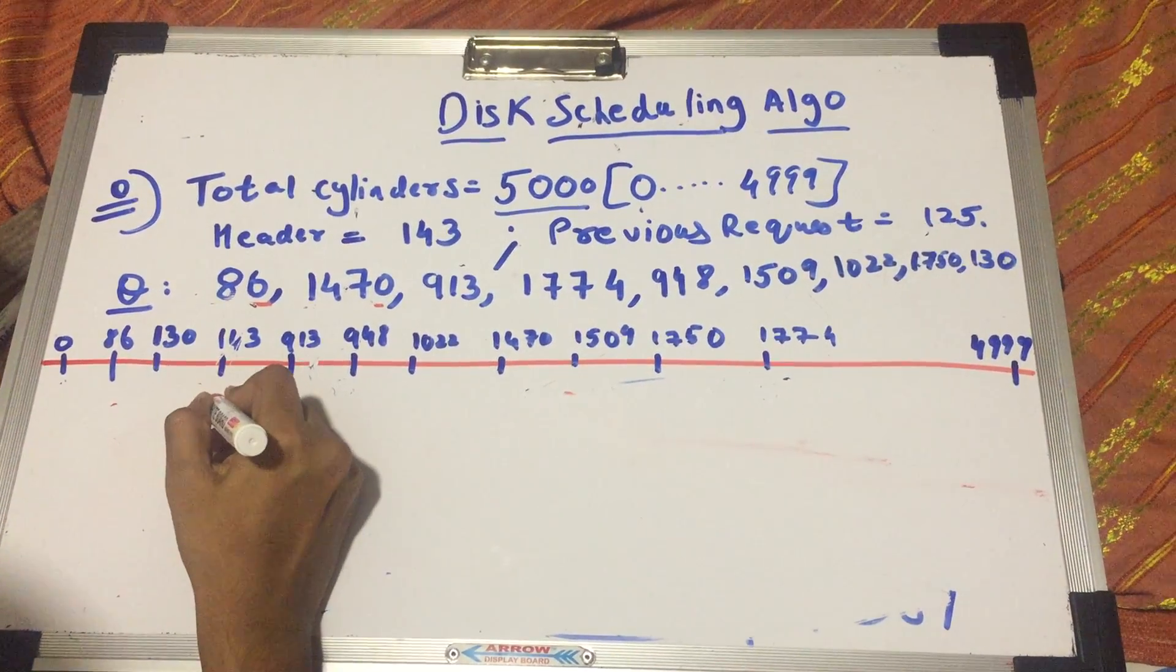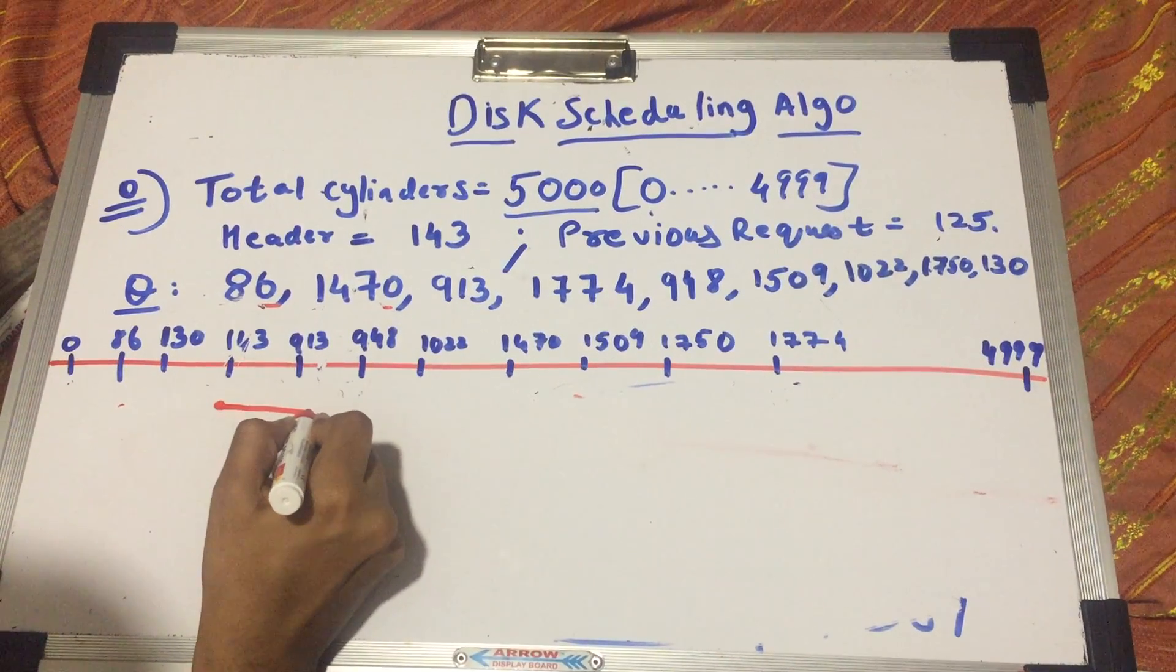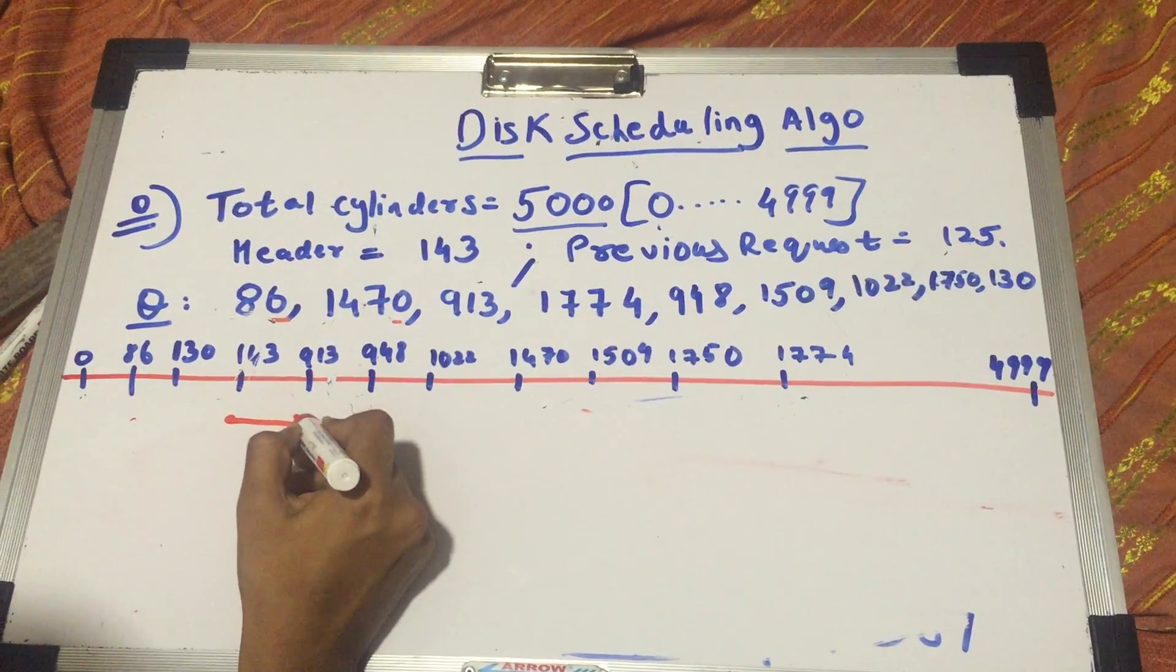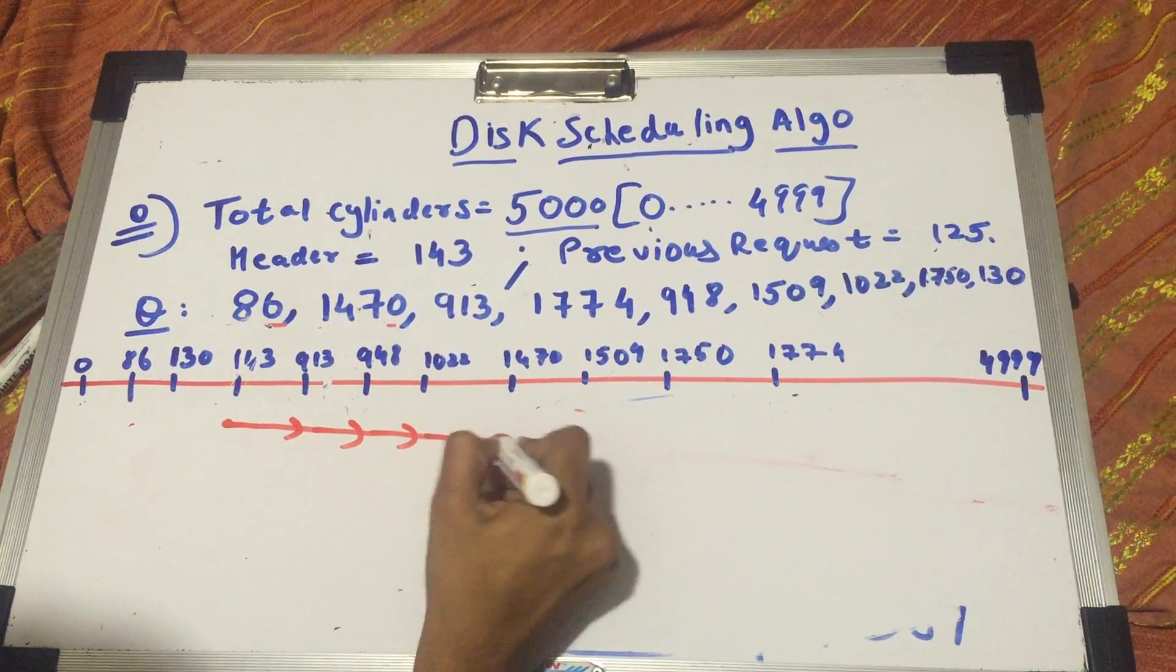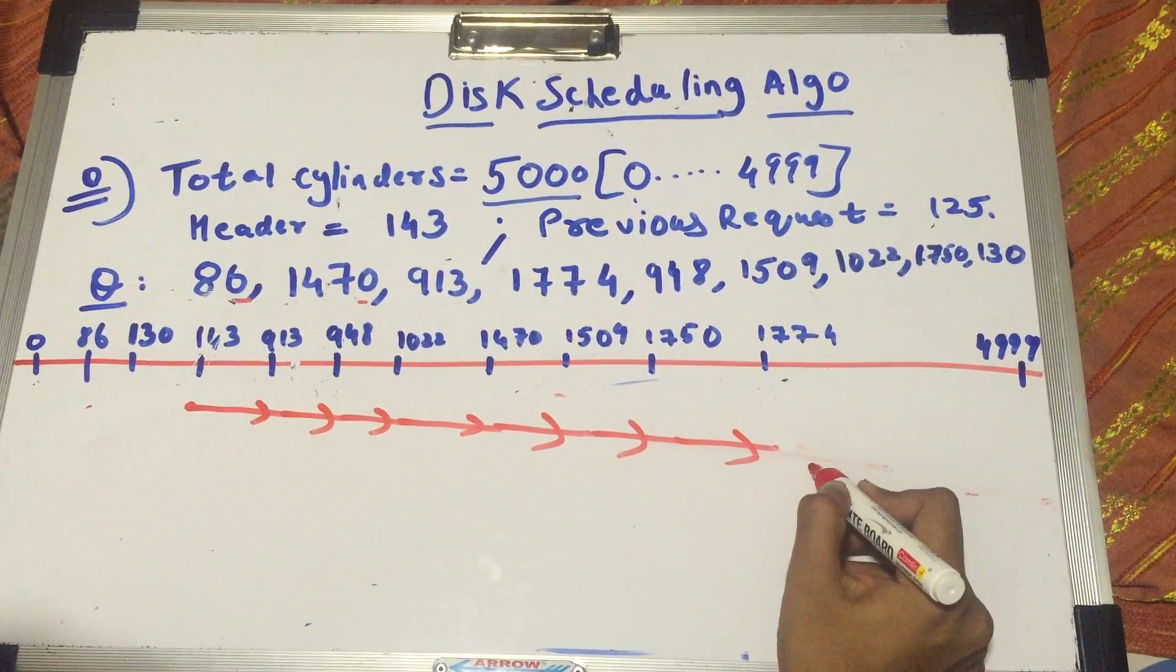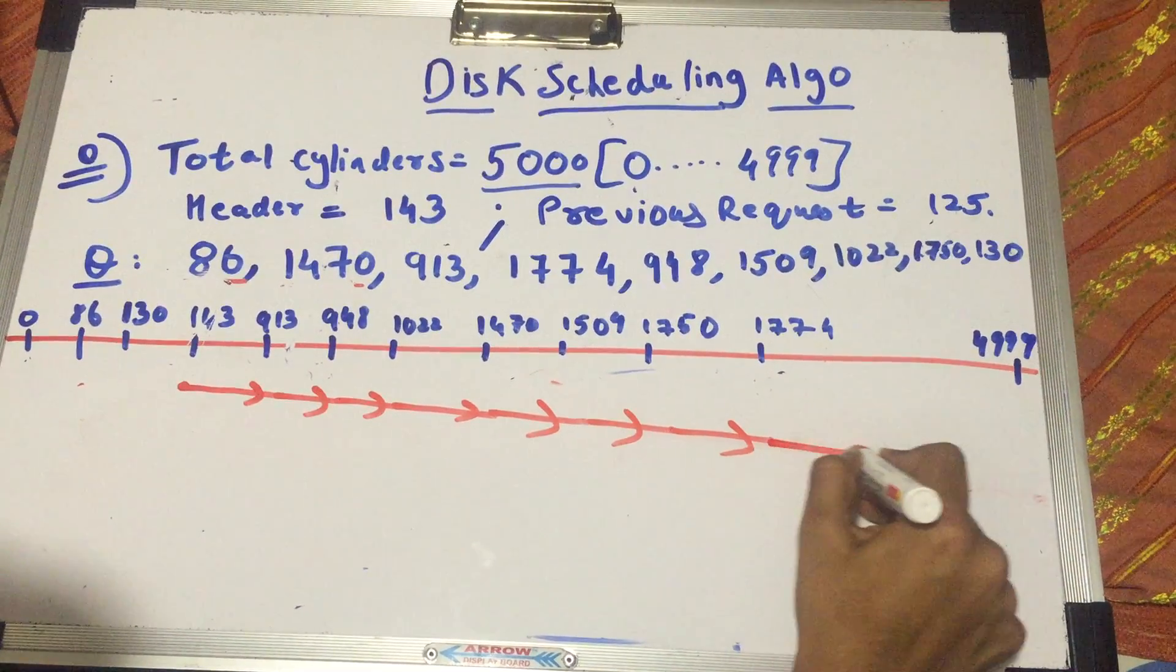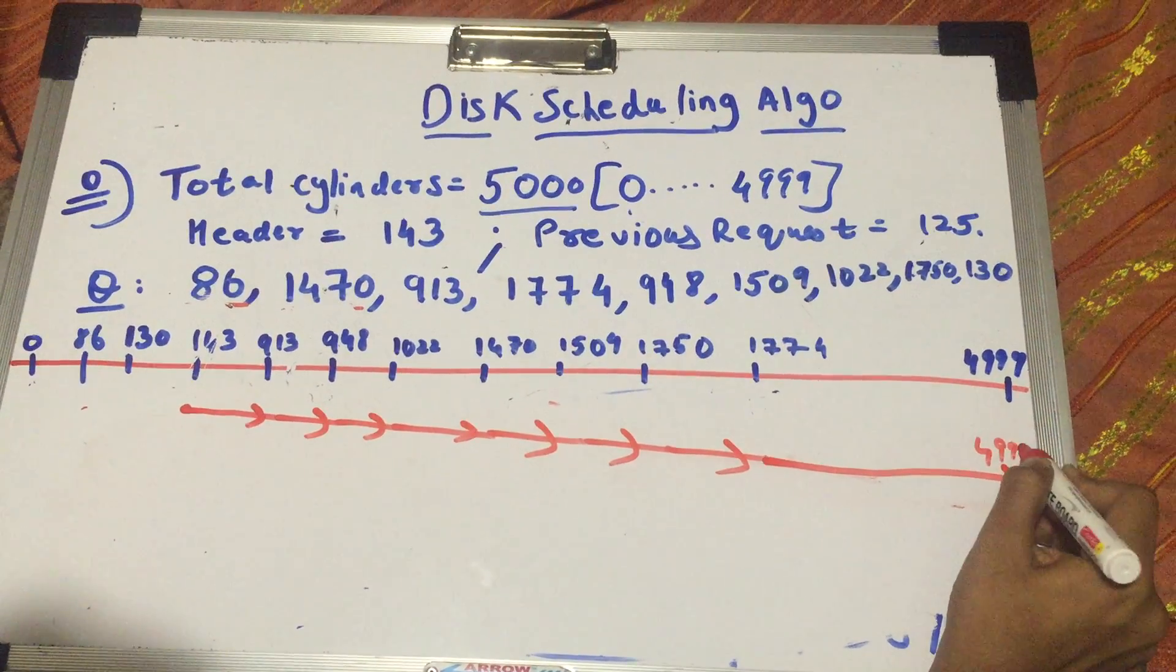Since like an elevator, I'll start at 143, then I'll start covering the cylinders at 913, 948, 1022, 1470, 1509, 1750, 1774. Now, just because this is a SCAN algorithm, this goes way up to the end, to 4999.